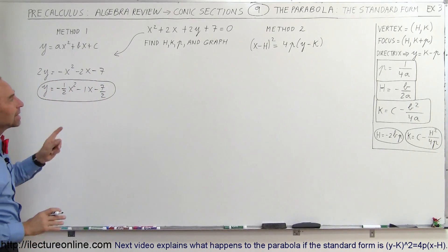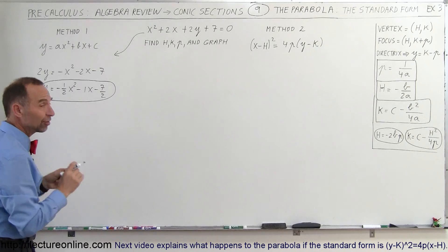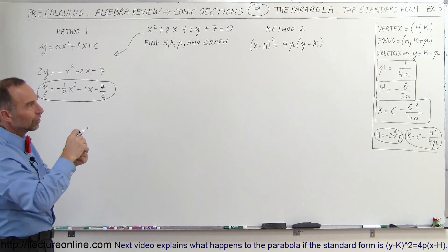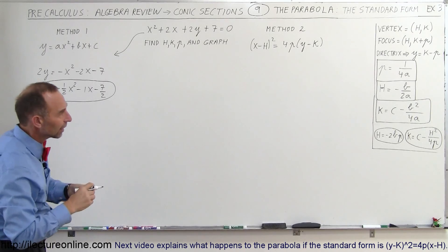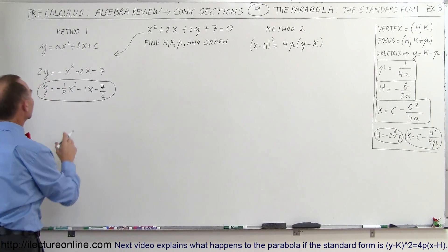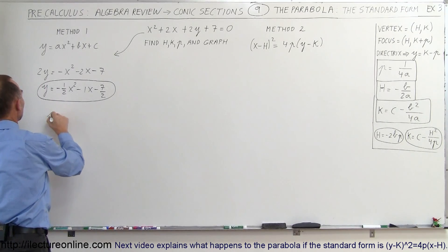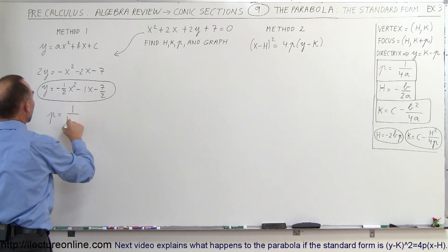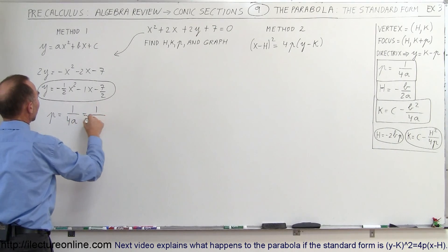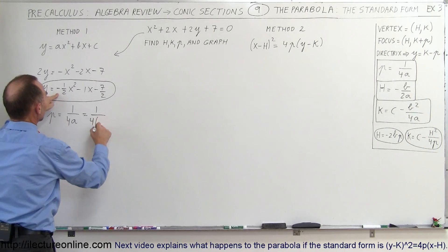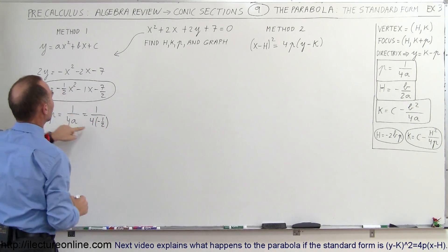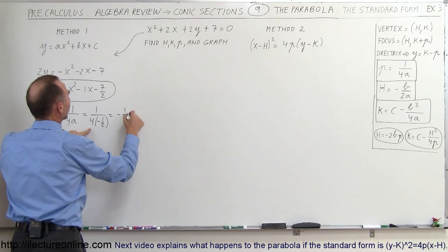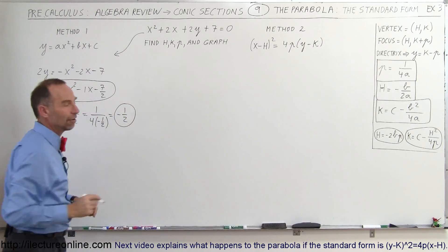Now we can find p, the distance from the vertex to the focus, or from the vertex to the directrix. p is equal to 1 over 4a, which is 1 divided by 4 times negative one-half. So p is equal to negative one-half.